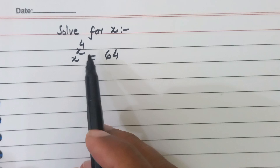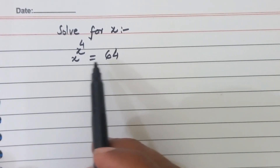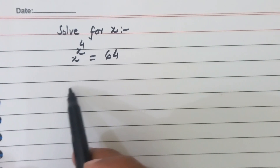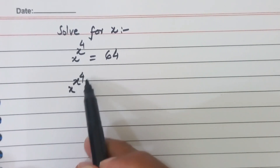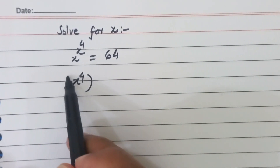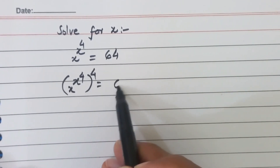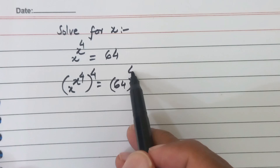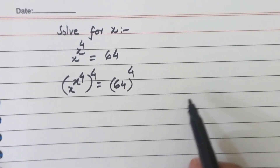We will raise both sides to the power 4. So, raising both sides to the power 4, it becomes equal to 64 raised to the power 4. So, we have raised both sides to the power 4.